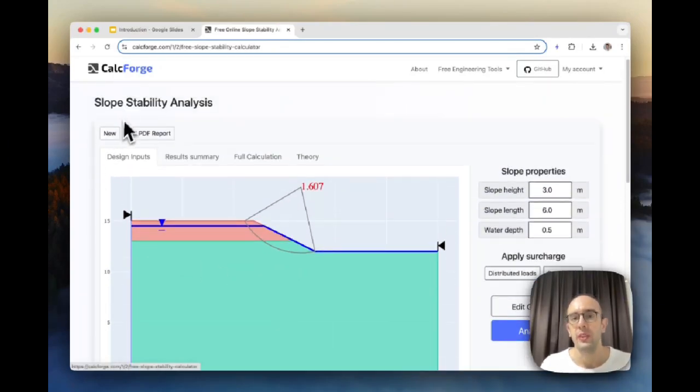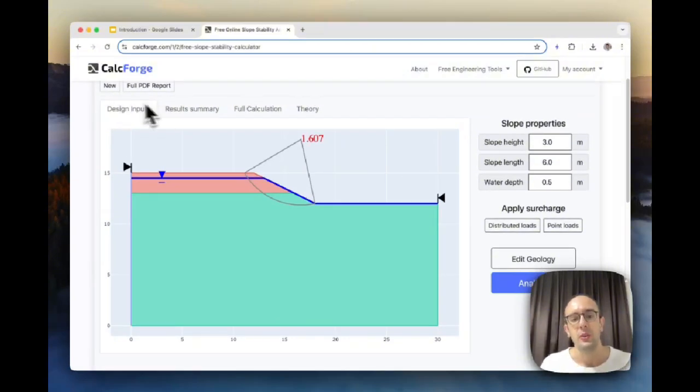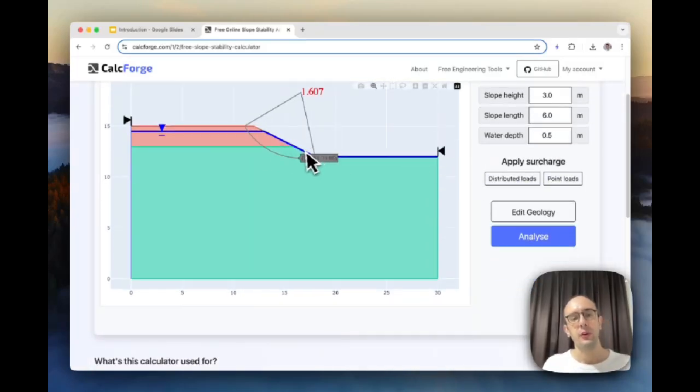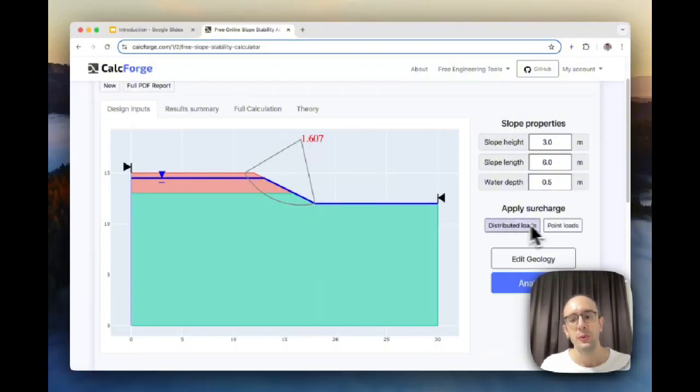But you can actually also use this user interface that we've developed where you can basically enter your profile for your slope and it will generate that envelope or that failure surface for you and tell you the factor of safety. On the left is a visual representation showing the groundwater level, the different layers of geology, and the overall height and dimensions of the slope. On the right is where we can actually configure this. We can change things like the slope height, the length, the water depth. We can also add or edit different loads, apply distributed loads or point loads, and also edit the geology.